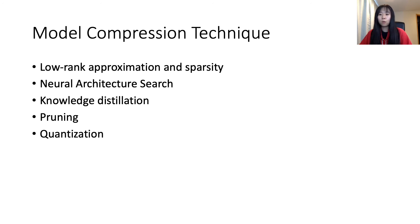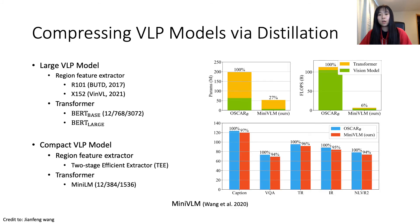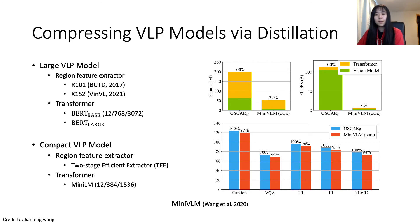A quick overview of model compression techniques: there are many, including low-rank approximation, neural architecture search, knowledge distillation, pruning, and quantization. For VLP models, two techniques have been explored: knowledge distillation and pruning. To compress VLP models, first we need a compact model. Mini-VLM is the first work that proposes a more compact VLP model. In Mini-VLM, the authors consider a VLP model end-to-end, composed of a region feature extractor (an object detection model) and a transformer for multimodal fusion. Mini-VLM is much more compact on both the region feature extractor and transformer.